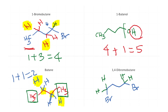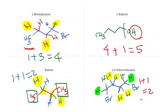For 1,4-dibromobutane, there are four CH₂ groups. The two terminal CH₂s: replacing a hydrogen on either gives the same compound, so the green CH₂s are identical. Doing a similar exercise with the two internal CH₂s shows they are also identical. Therefore you get one plus one, which equals two signals.